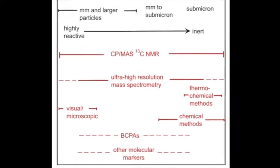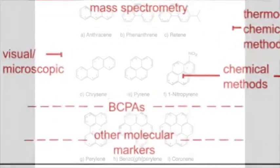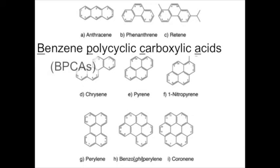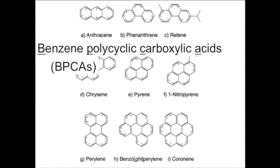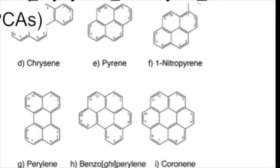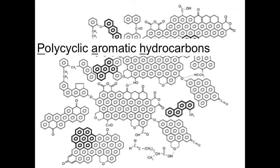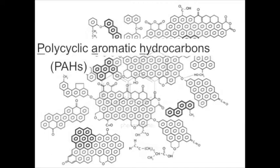The method that we will learn about today involves a particular type of molecular marker, benzene polycyclic carboxylic acids, or BPCAs for short. BPCAs aren't technically present in the pyrogenic material, but they are produced through a chemical reaction in a laboratory. They are formed from polycyclic aromatic hydrocarbons, or PAHs, which are a main component of pyrogenic material.